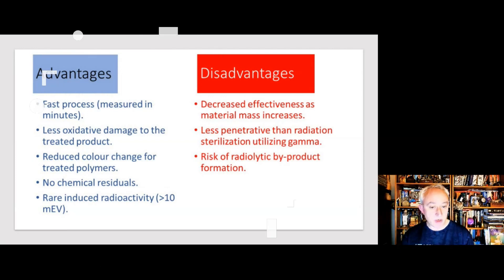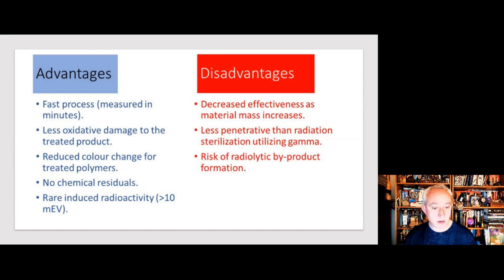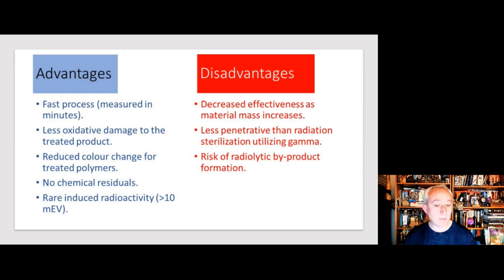In terms of advantages, e-beam is a fast process — typically around five to seven minutes. Compared to other sterilization methods, particularly gamma radiation, there is less oxidative damage to the treated product and color changes are rare, although some polymer products may show an initial yellow tint that is generally short-lived. There are no chemical residues, and it is relatively rare for there to be induced radioactivity, although this can theoretically occur when processing at 10 MeV or greater, so an activation assessment is required.